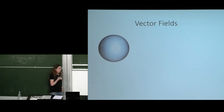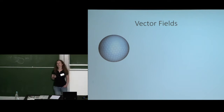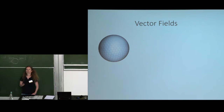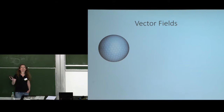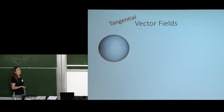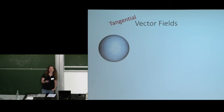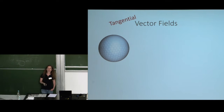If you look at the velocity of the wind — the speed of the wind at every point on the surface of the planet — this is called a vector field. This vector field is tangential to the Earth's surface, so we call it a tangential vector field. Tangential vector fields are very useful in science, engineering, and they have quite a lot of applications in computer graphics as well.